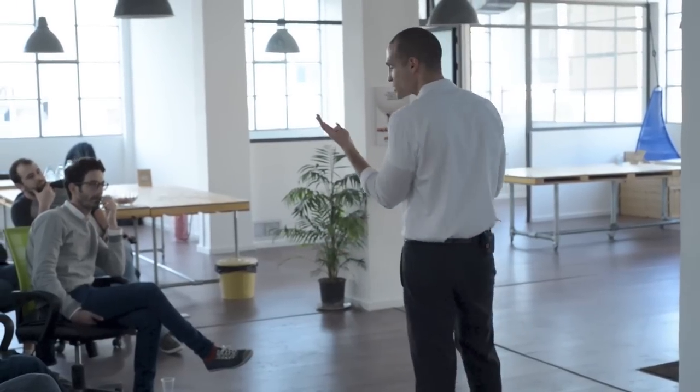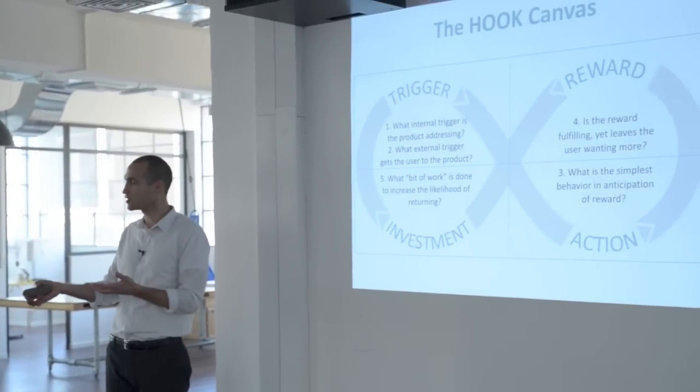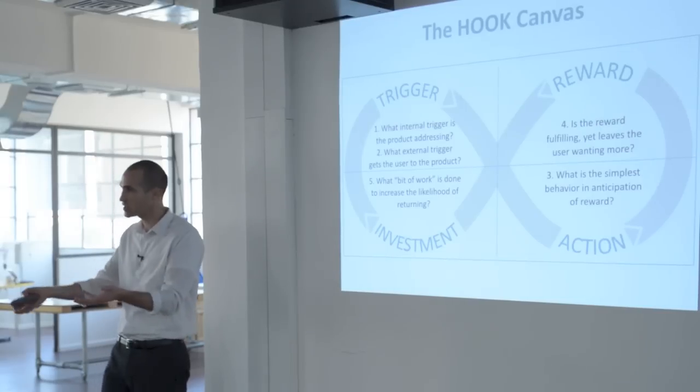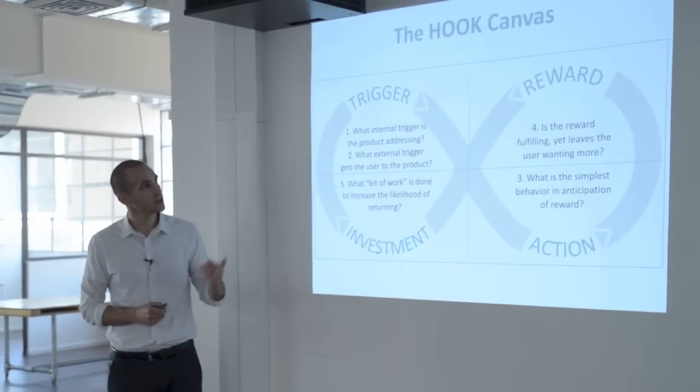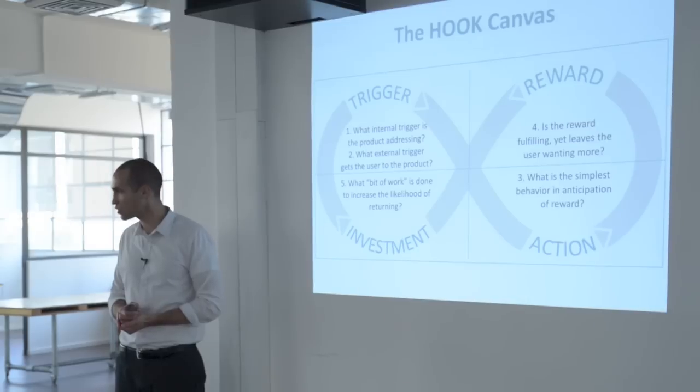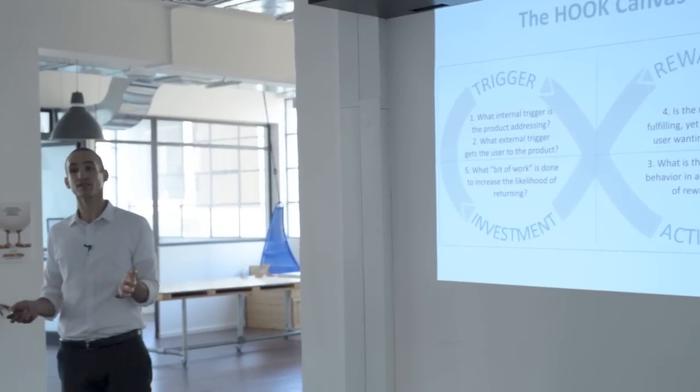So, here's what you can remember. Remember, the Hook Model is these four steps of a trigger, action, reward, and investment. These are experiences designed to connect the user's problem with your solution with enough frequency to form a habit. And through these successive cycles, by running users through these four steps, we form associations, we create preferences, and we change attitudes about the product. So, remember, Atari, a trigger, action, reward, and investment. And that you can use these five questions to ask yourself the habit-forming potential of your product. And as you're designing new features, as you're trying to come up with what should we build next if your product is a habit-forming product, what internal trigger is your product addressing? What's the itch? What external trigger gets the user to the product? Number three, what's the simplest behavior done in anticipation of reward? Number four, is the reward fulfilling and yet leaves the user wanting more? And then finally, what's the bit of work done to increase the likelihood of the user returning next time? So, that's the basics of the hook. There's a lot more in the book, by the way. I know that was very fast, a lot of information.